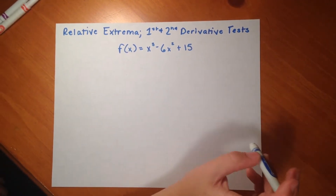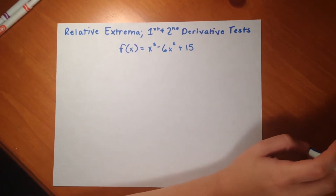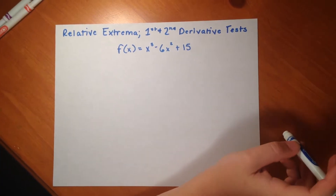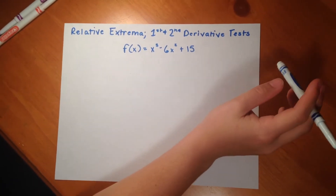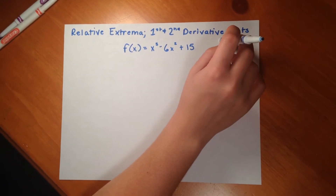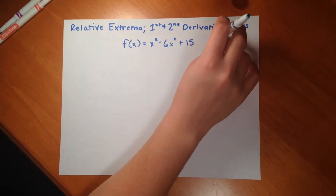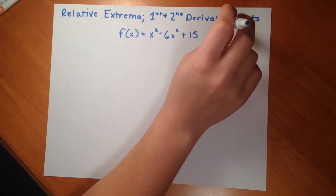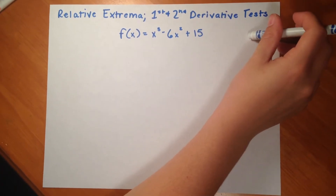Today we're going to look at relative extrema and the first and second derivative tests. What these tests can tell us are whether the function is increasing or decreasing and at what intervals, the relative extrema — so the relative minimum and the relative maximum —